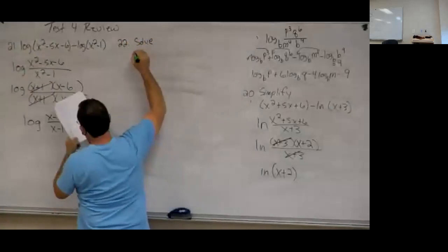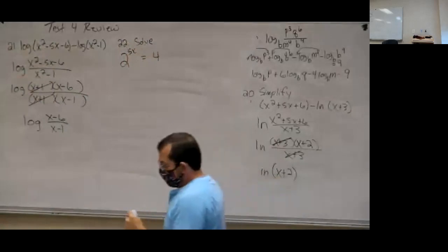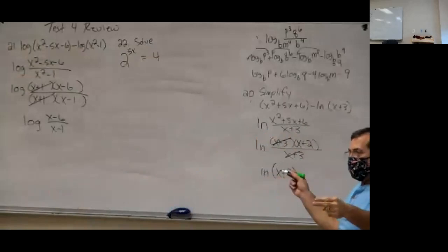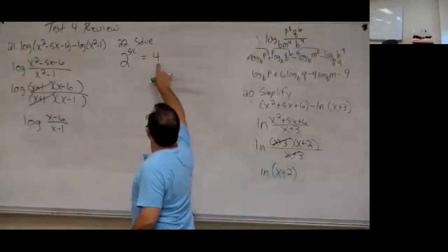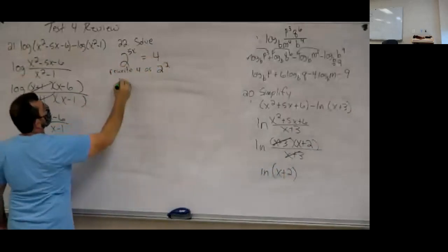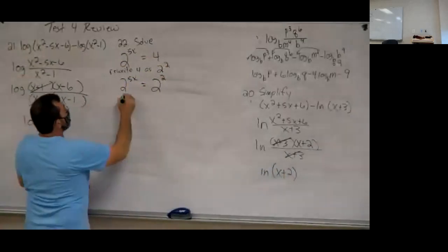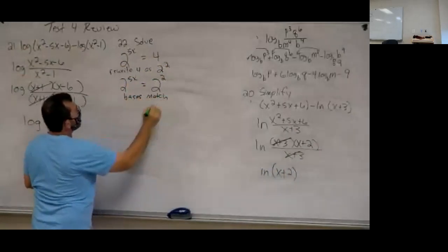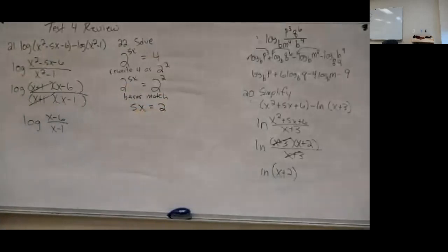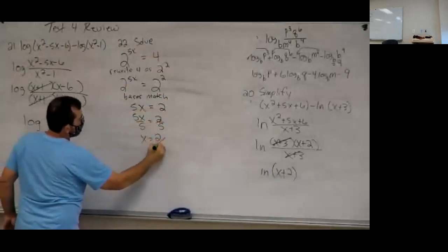Now we solve exponential equations. Problem 22: 2 to the 5x equals 4. This one we can rewrite with the same base — 4 equals 2 squared. So 2 to the 5x equals 2 squared. When the bases match, the exponents must be equal: 5x equals 2. Divide both sides by 5, so x equals two-fifths.